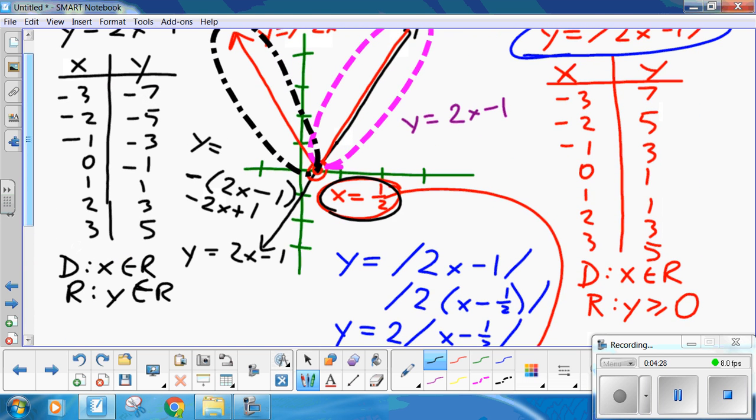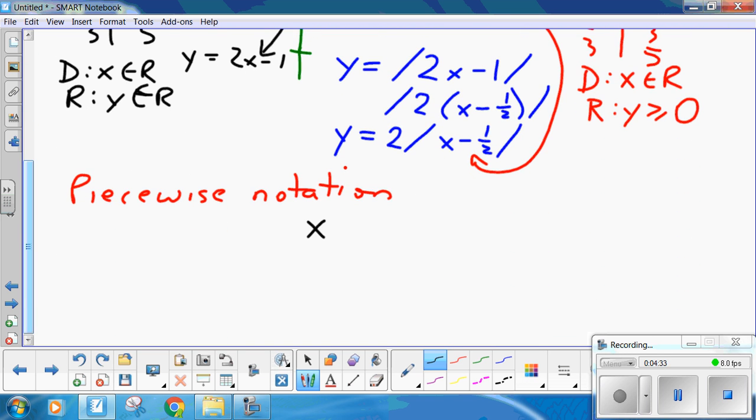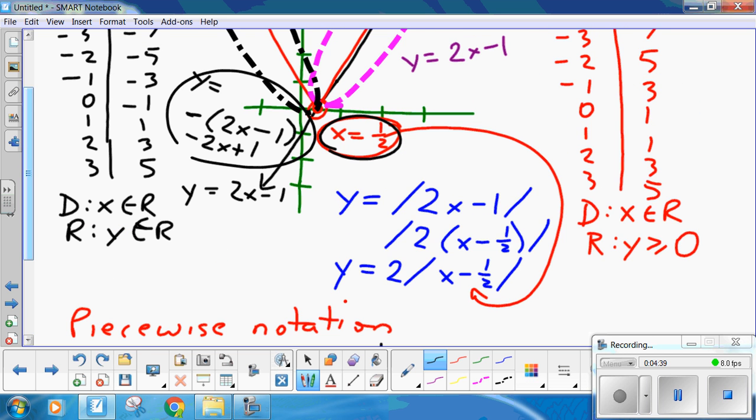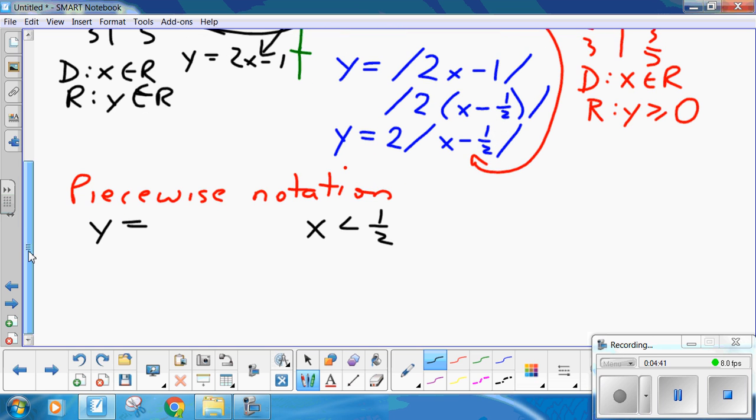When, here, x, we look to the left of our critical point. x equals 1 half. So, when we're to the left of that x is less than 1 half, y is this version. Minus 2x plus 1. And, when we're to the right of it.